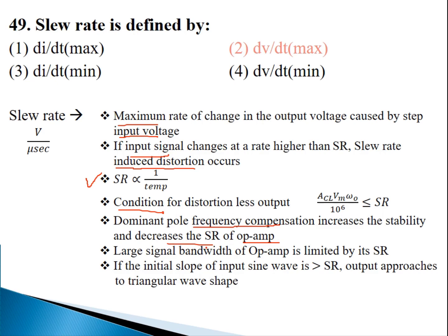Large signal bandwidth is the op-amp's limit. If the initial slope of the input sine wave is greater than the slew rate, then the output gets a triangular wave shape. The slew rate has units of volts per microsecond.